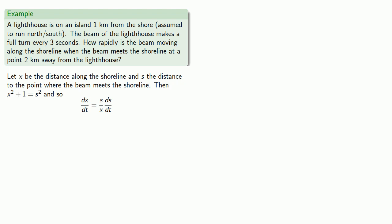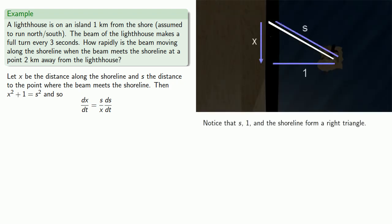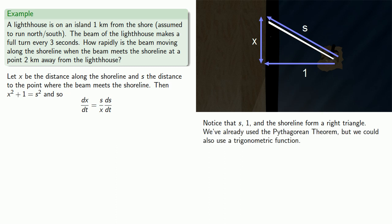So let's go back to our schematic diagram. Notice that s, 1, and the shoreline form a right triangle. We've already used the Pythagorean theorem, but we could also use a trigonometric function. And here we might see that 1 over s is equal to the cosine of theta, where theta is the angle between the perpendicular to the shore and the beam.